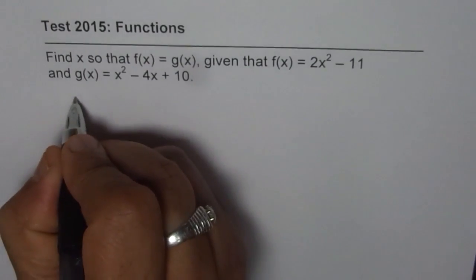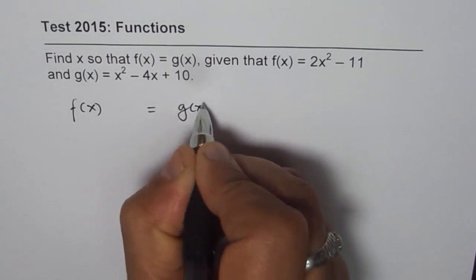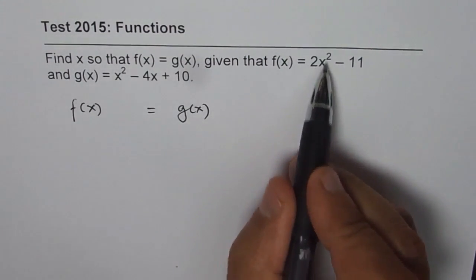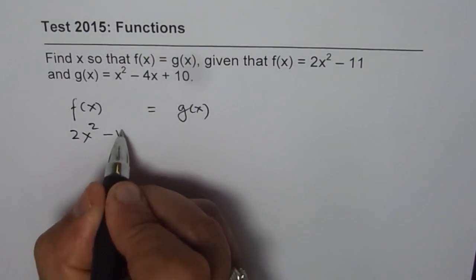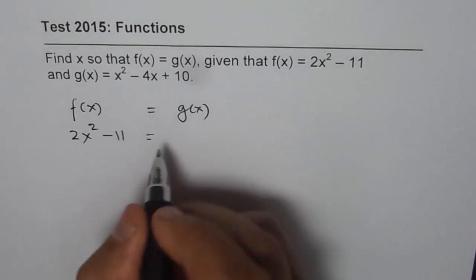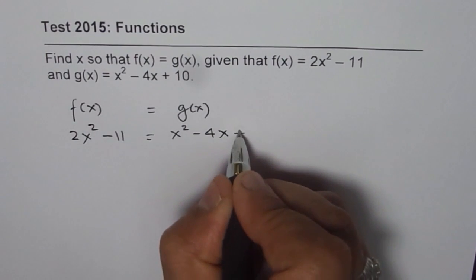Now, we need to find the value of x for which f of x is equal to g of x. f of x is 2x squared minus 11, so we can write 2x squared minus 11 equals g of x, which is x squared minus 4x plus 10.